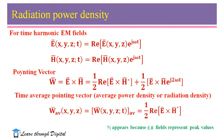For time varying fields, it is more desirable to find the average power density, which is obtained by integrating the instantaneous Poynting vector over one period and dividing by the period. For time harmonic variations of the form e^(jωt), the complex fields E vector and H vector are related to their instantaneous counterparts as: E vector equals the real part of E(x,y,z) e^(jωt), and similarly, H vector equals the real part of H(x,y,z) e^(jωt). The average power density W_avg(x,y,z) equals one-half of the real part of E vector cross the complex conjugate of H vector.